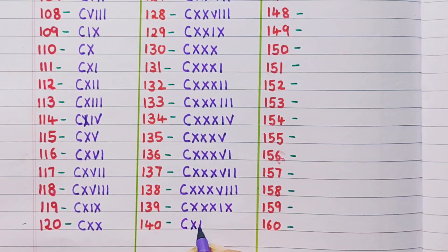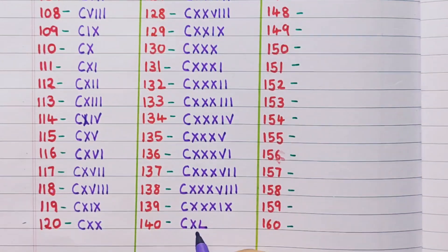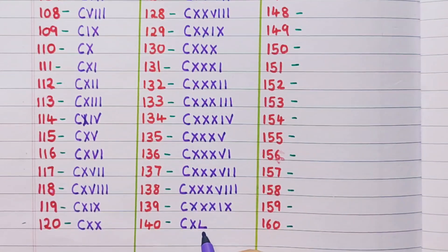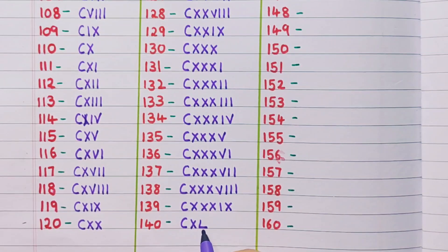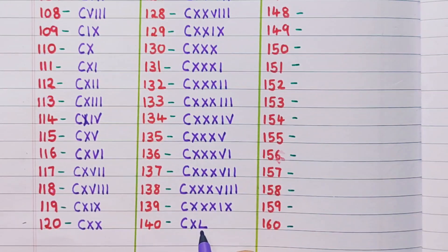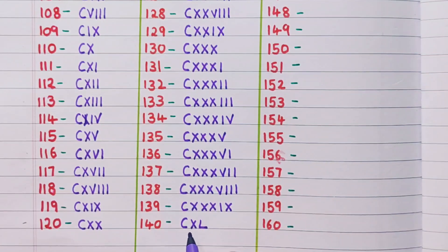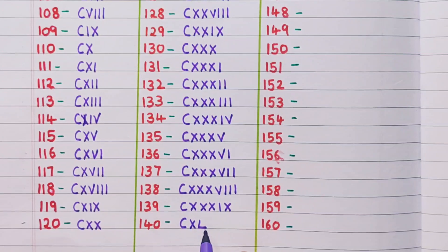140 is CXL. Now the value of L is 50, and if X is before that, so it becomes 50 minus 10, that is 40. So the value of XL is 40. So 140 is represented as CXL.